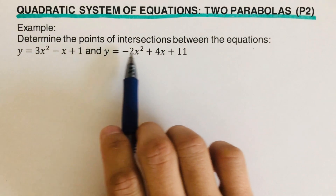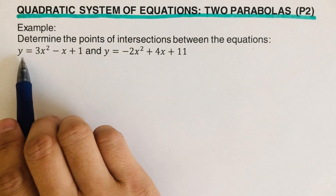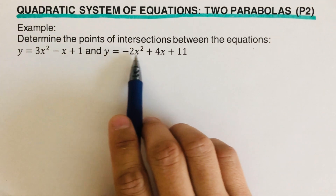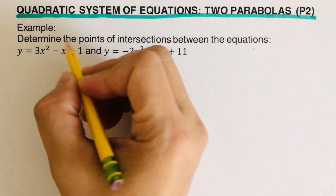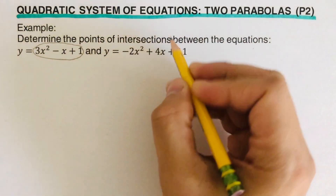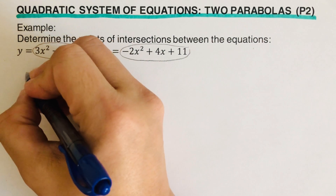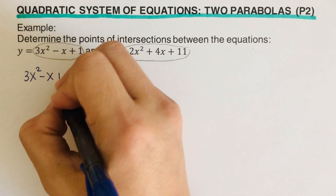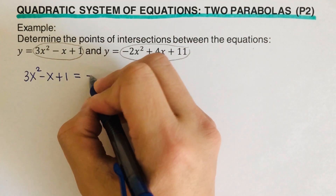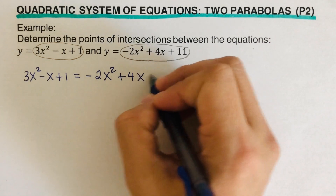Determine the points of intersection between these two equations. So we have this first parabola and this second parabola. In order to determine their points of intersection, we are supposed to use the equal values method — we set the right-hand sides equal to each other. So that means 3x squared minus x plus 1 equals negative 2x squared plus 4x plus 11.